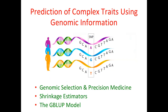After the discussion on pedigree information, we will show you how genomic information can be used to improve predictions and inference in these models. We will discuss prediction of complex traits using genomic information, which is important in both precision medicine and agricultural breeding. We will cover methods such as shrinkage estimators using penalized regression, Bayesian methods, and the famous GBLUP model — a kind of animal model using genomic information to model relationships between individuals.